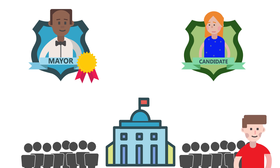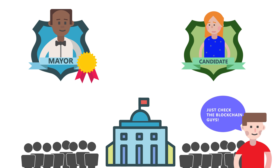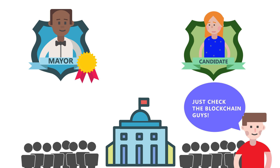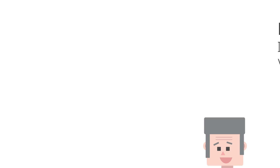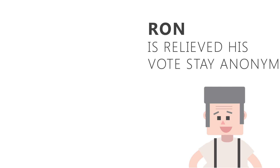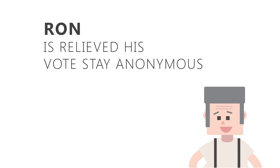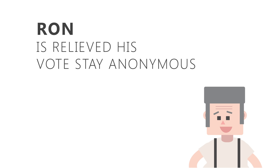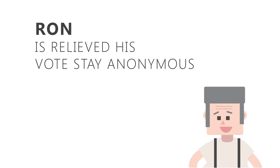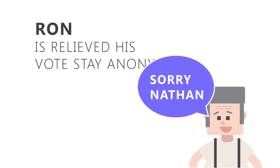Alan, her husband, urges her supporters to remain calm and verify the results themselves by checking the blockchain to verify that their vote was what they had entered. Meanwhile, Ron, a close friend of Nathan, is relieved to know that even if the blockchain is auditable, no one will ever find out that he voted against his close friend.